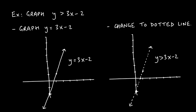Example: graph y > 3x - 2. First, graph the equation y = 3x - 2. The y-intercept is -2; going up 3 and right 1 gives the second point. Connect the dots. Because this is a strict greater-than (not ≥), this line must be changed to a dotted line. Once you have your two points, draw a dotted line connecting them — avoid drawing a solid line first and then trying to erase portions of it.